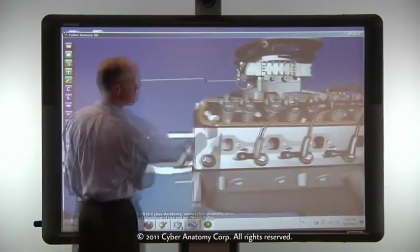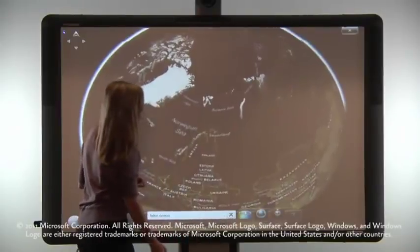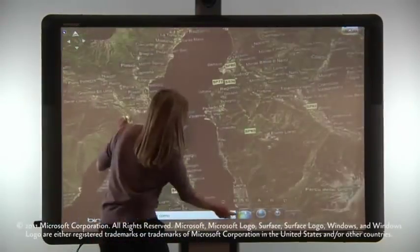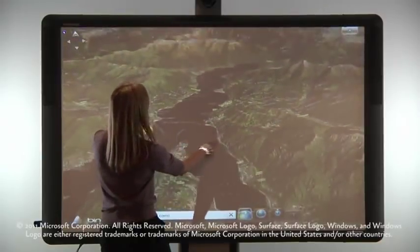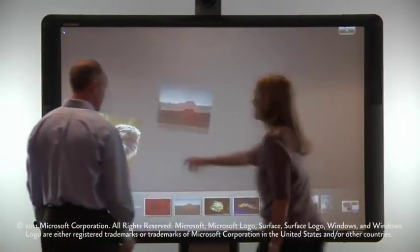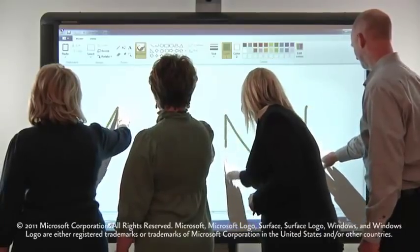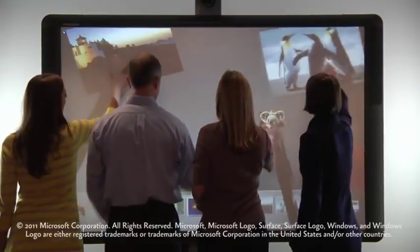Designed to be compatible with third-party software, ActiveBoard 500 can be used to enrich and enhance content in any environment. With software like Windows 7 TouchPack, ActiveBoard 500 supports up to four simultaneous touchpoints, creating the ultimate interactive and collaborative experience.